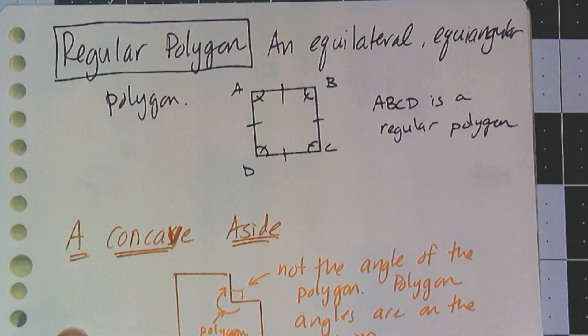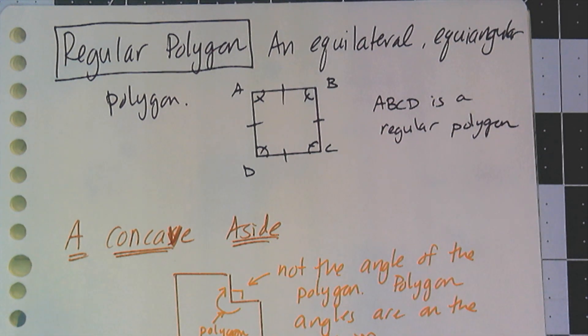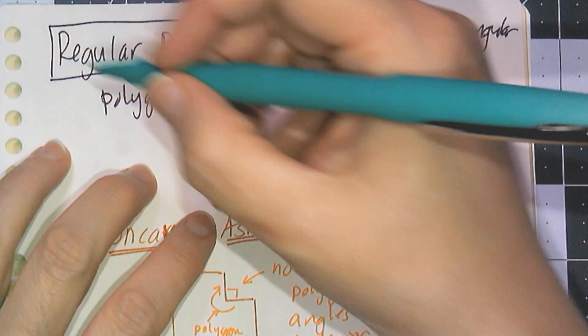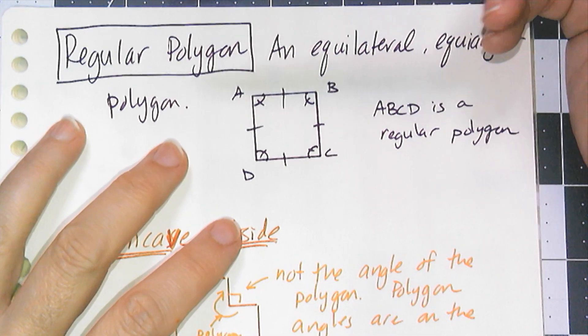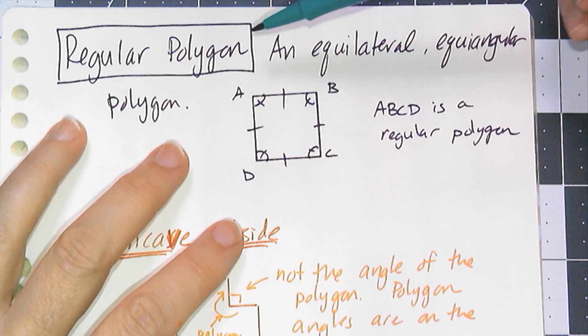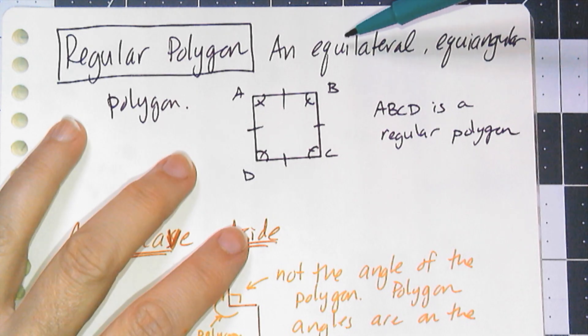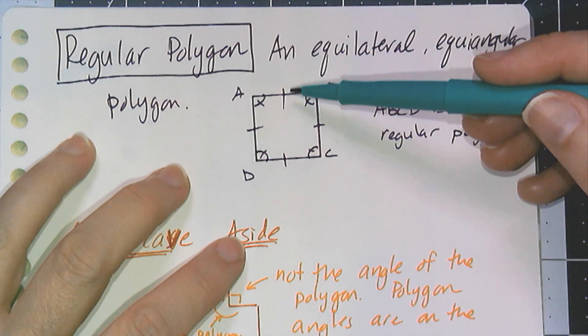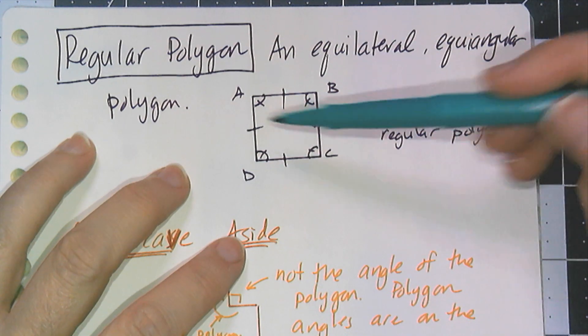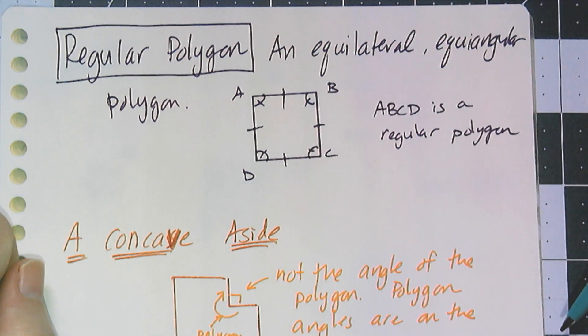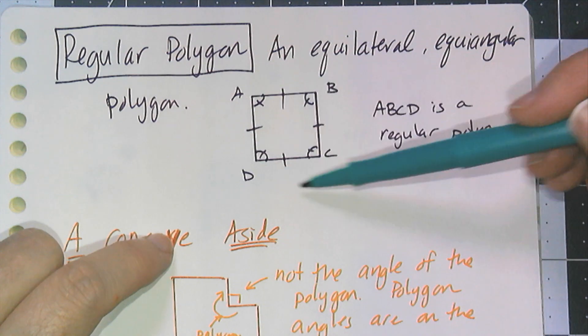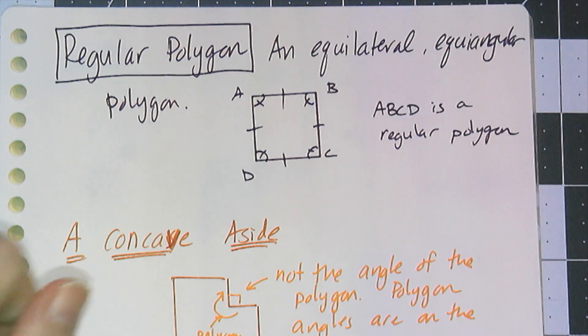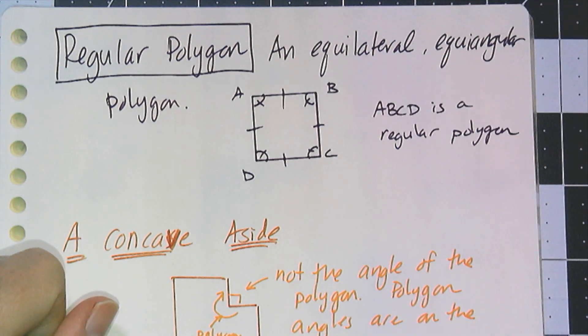Now that I have equilateral and equiangular, I can combine them into a very important word, the regular polygon. By definition, a regular polygon is equilateral and equiangular. So all of the sides are equal length, all of the angles are equal measure. So by marking it like this, I'm telling you that I have, in this case, a regular quadrilateral.